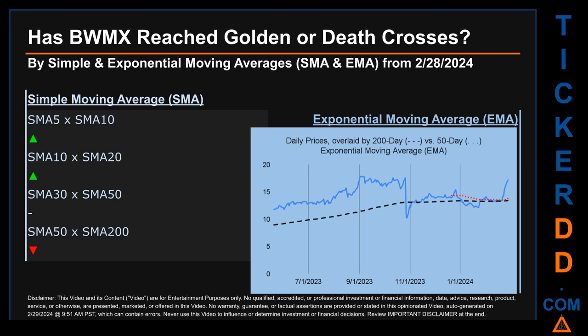Has BWMX price reached golden or death crosses? Golden cross and death cross are basic signals that compare average prices across two specified trade day ranges — a short-term versus a long-term range, for example five-day versus ten trade days. Essentially, a golden cross is a bullish signal that appears when a ticker's short-term moving average crosses above its long-term average. Vice versa, a death cross is a bearish signal when the short-term crosses below its long-term moving average. We looked at both simple moving average (SMA) and exponential moving average (EMA), the latter giving more weighting to recent prices.